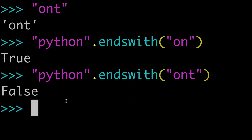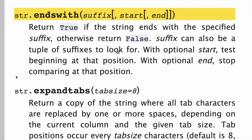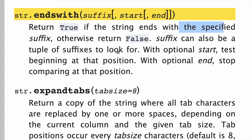So that is our base scenario, and we're going to go into a lot more detail in this video. Let's start with a look at the docs. The endswith string method takes one mandatory argument, which we're calling suffix. It also takes two optional arguments called start and end. endswith is going to return true if the string ends with the specified suffix, otherwise it's going to return false — so basically a boolean of either true or false.